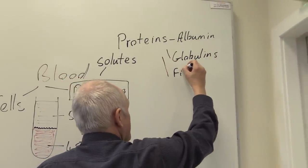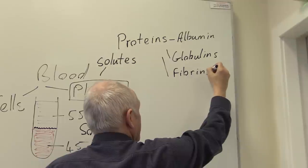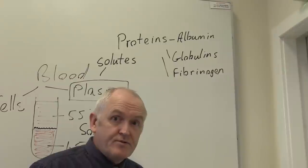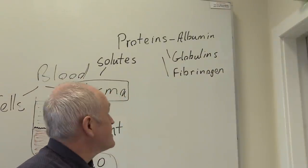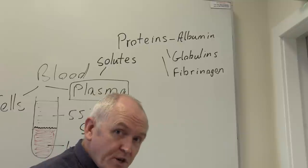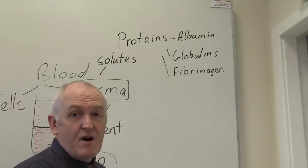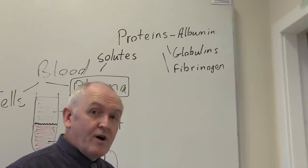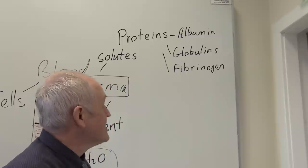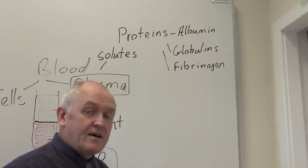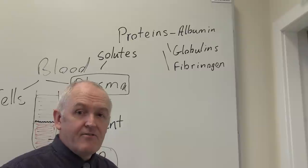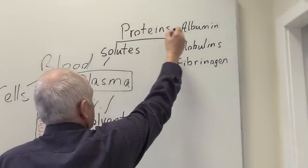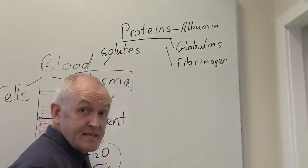Other components of the globulins — the immunoglobulins — are actually made by the white cells, the lymphocytes, because the immunoglobulin component of the globulins are the immune proteins giving the body specific acquired immunity. Another protein is fibrinogen, which is the clotting protein. Under the right circumstances, soluble fibrinogen will be converted to insoluble fibrin, forming long sticky strands to which red and white cells adhere, forming a clot.